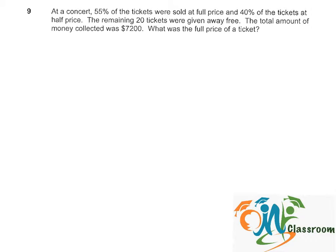We can use the branching method to represent this. So, 55% of the tickets were sold at full price, and 40% of the tickets were sold at half price.